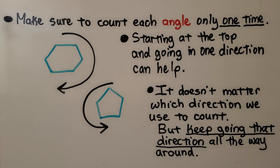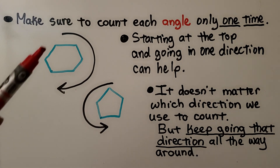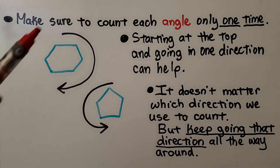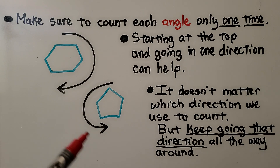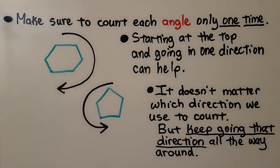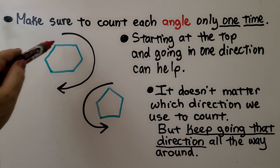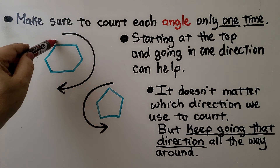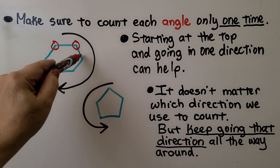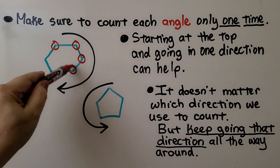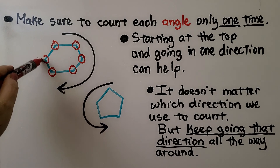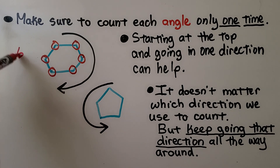Make sure to count each angle only one time. Starting at the top and going in one direction can help. It doesn't matter which direction we use to count, but keep going that direction all the way around. So if we start at the top, we can count how many angles this one has. We can start here and go one, two, three, four, five, six. It has six angles.